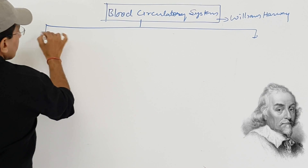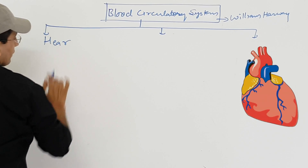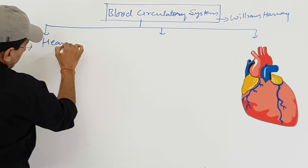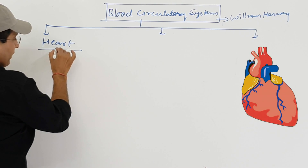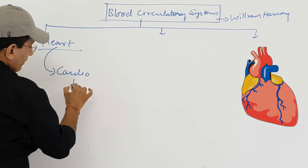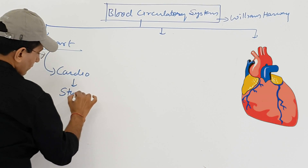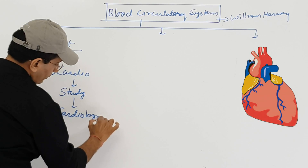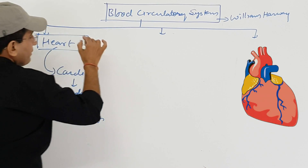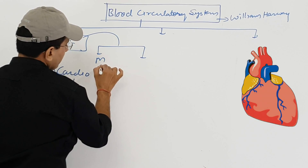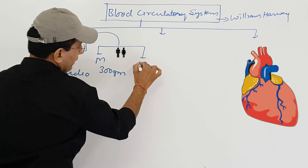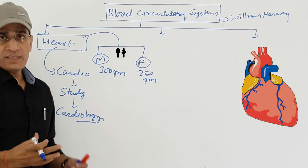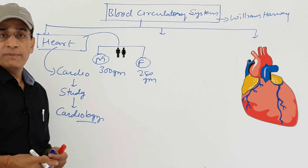The blood circulatory system is divided into three parts. The first is the heart. Technically in medical language, the heart is known as cardio, and the study of the heart is known as cardiology. The weight of the heart in males is 300 grams and in females it is 250 grams. The heart is also bigger in males than in females.